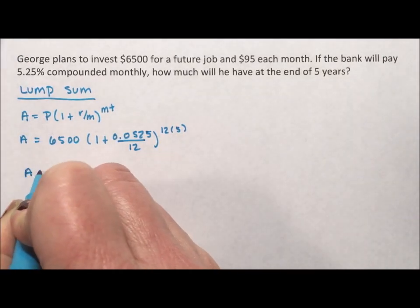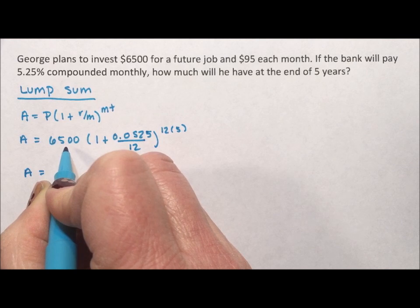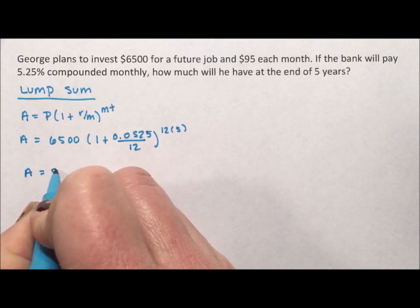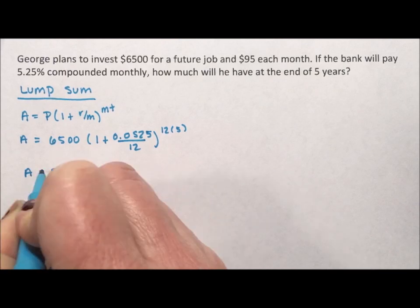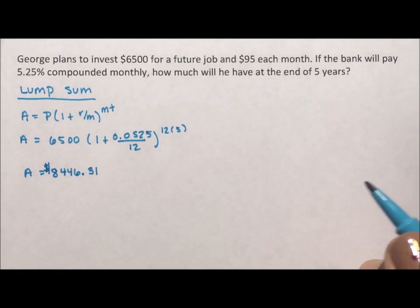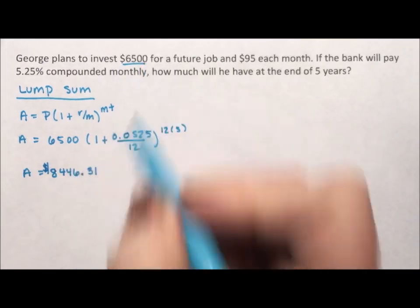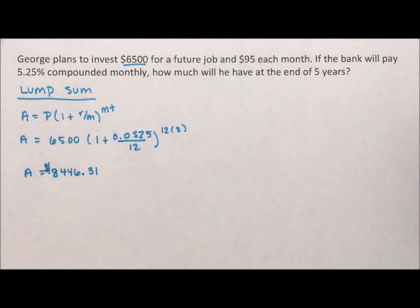And we find out the lump sum grows from $6,500 to $8,446.33. So this is the first thing we need to deal with with the money.